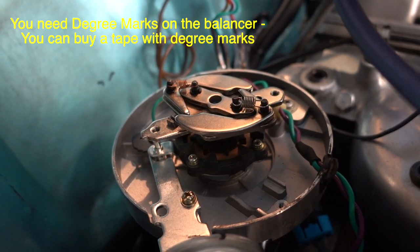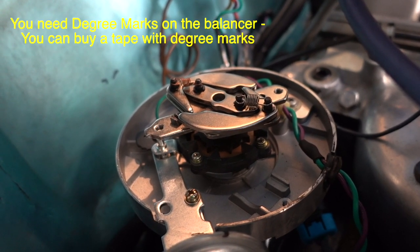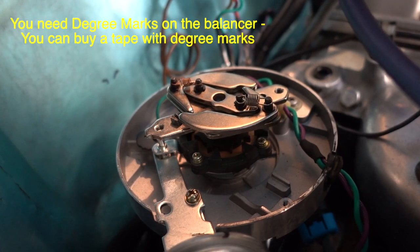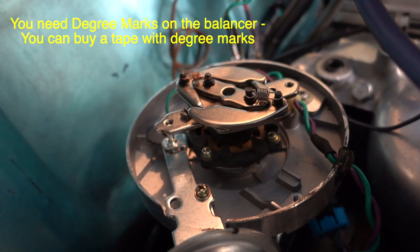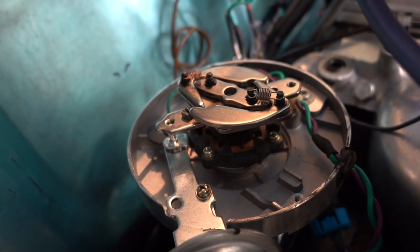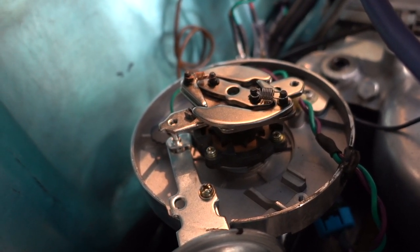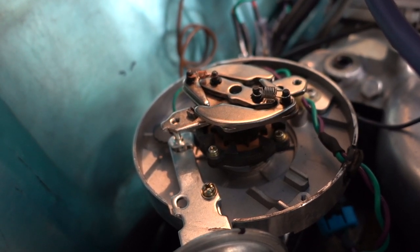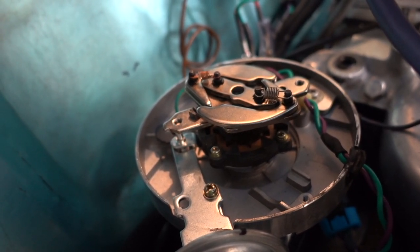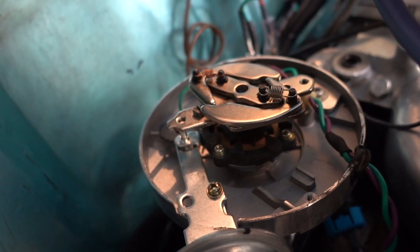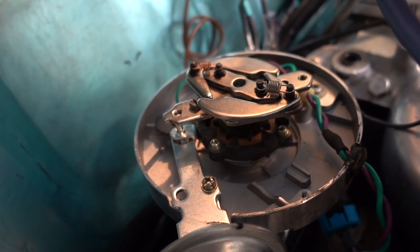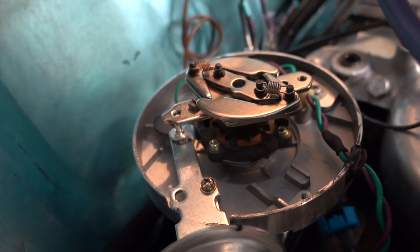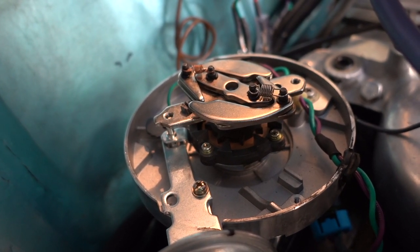Then take the springs off altogether and start it up and read the balancer again. And calculate the difference of what you've got from no advance to what you've got with full advance with no springs in it, then you'll know how much advance is in the distributor. So if you put your screw in and you don't have enough advance, and then you go back and you put one that's filed off a little bit more, you just keep going back and checking it.